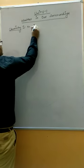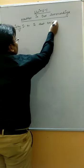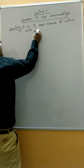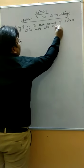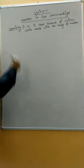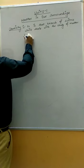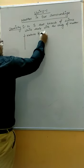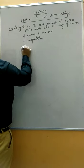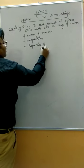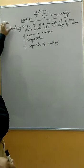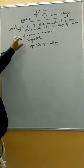Chemistry is that branch of science which deals with the study of matter. Basically, in chemistry we study the nature of matter, the composition of matter, and the different properties of matter. So these are the three points explained by chemistry — it tells us about the nature of matter, its composition, and its properties.